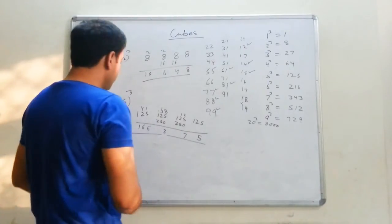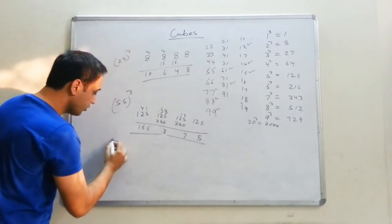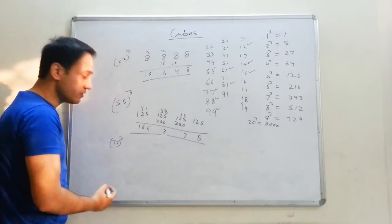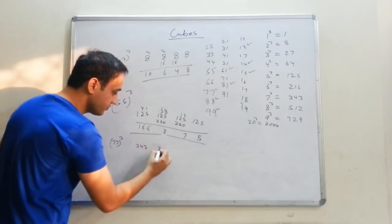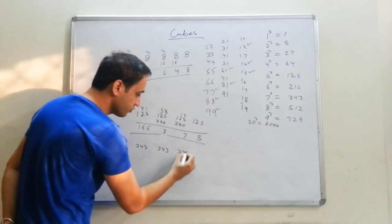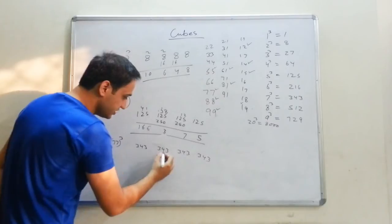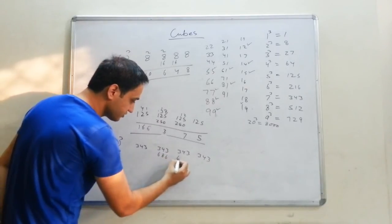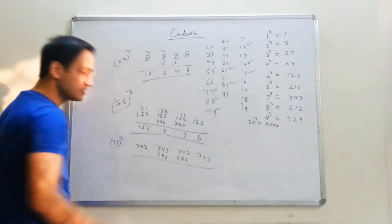So if you have to do a cube of 77, now you know what to do. Cube of 7 is 343, written as 343, 343, 343, 343. Double the middle digits: 686. Add these digits and that will be your answer.